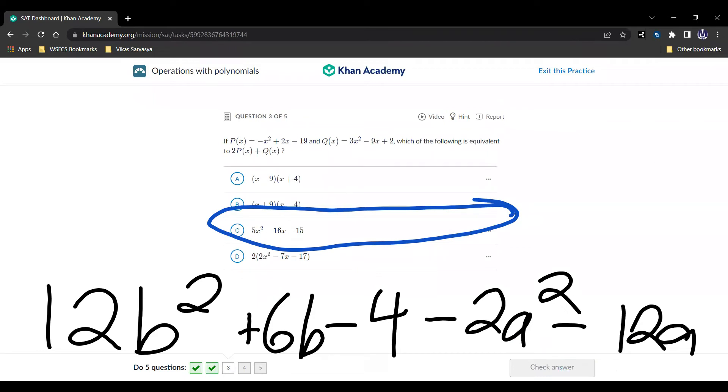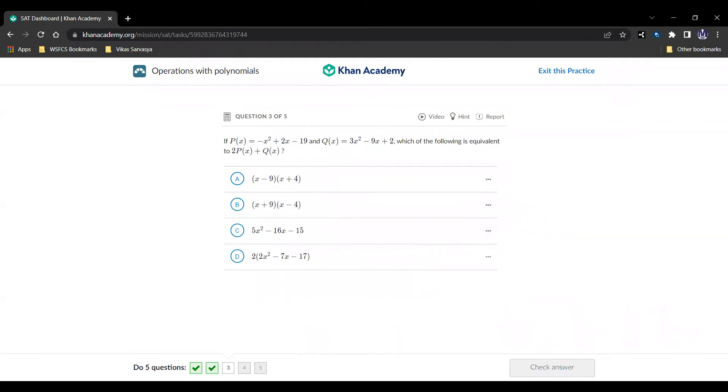Question number three, and here we are. If p of x equals negative x squared plus 2x minus 19 and q of x equals 3x squared minus 9x plus 2, which is equivalent to 2p of x plus q of x.